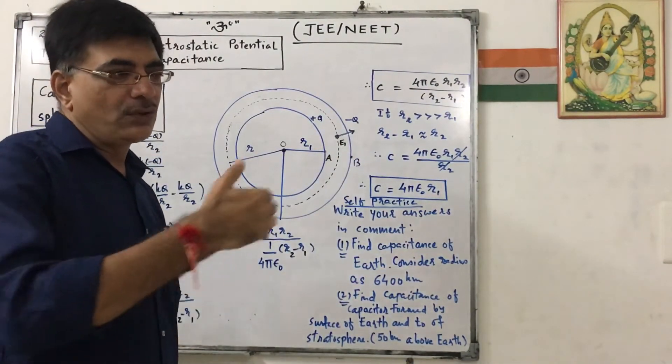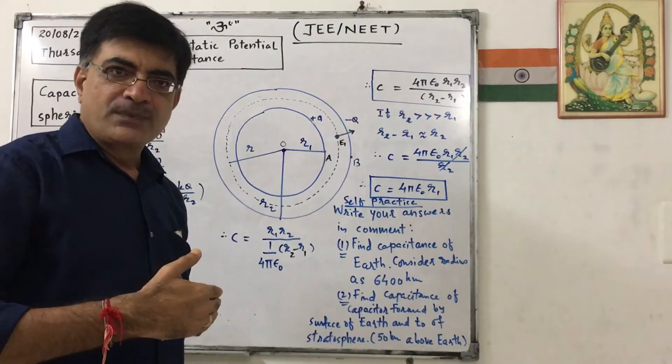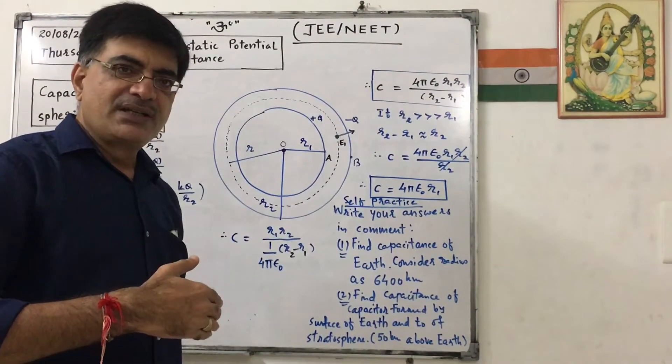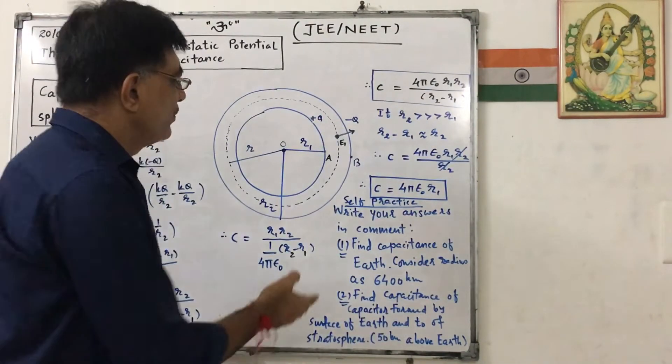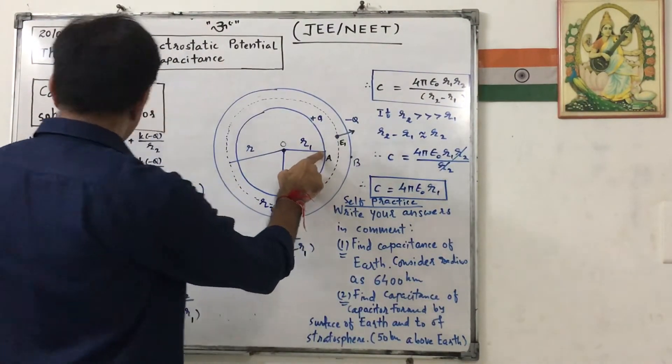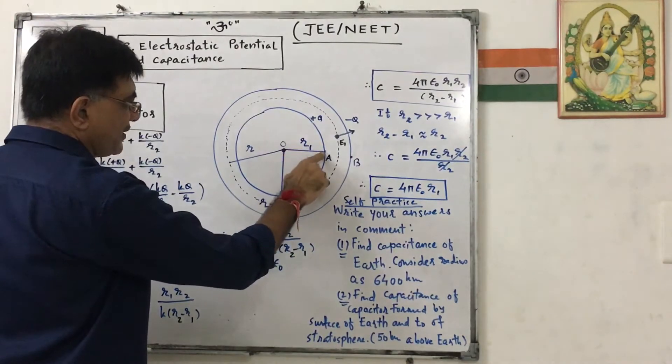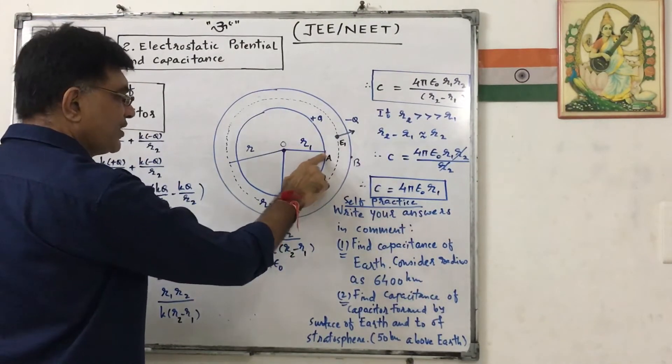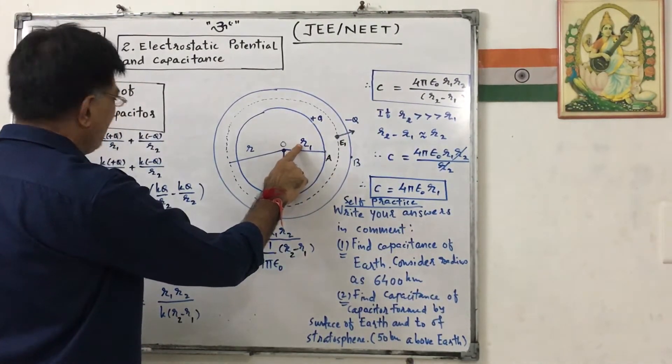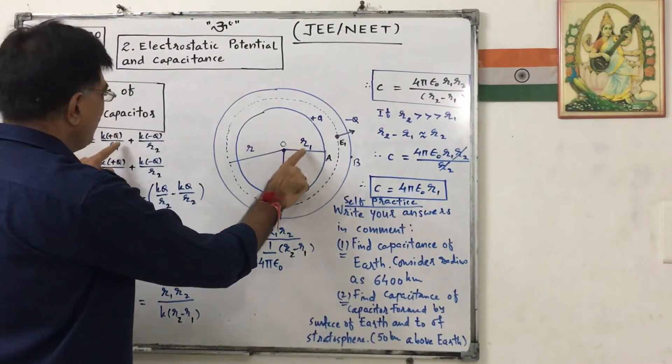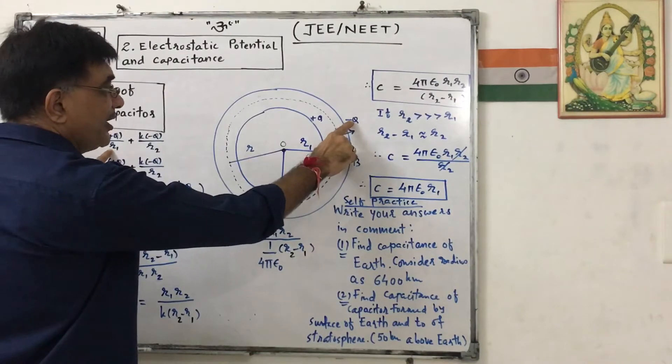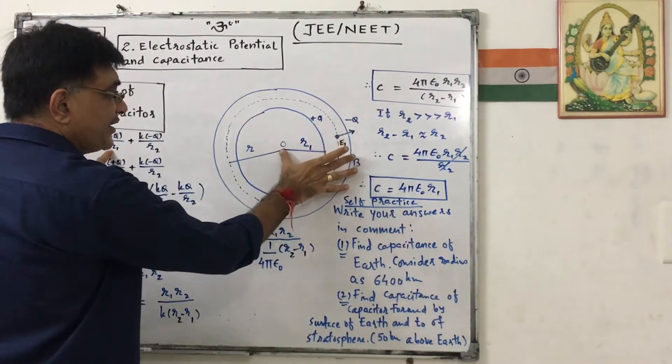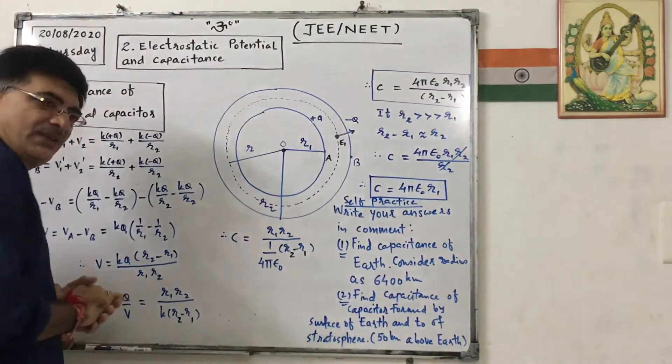Again we know that at all inside points, the potential is equal to the potential on the surface. So V at A equals to potential due to this shell plus potential due to this shell. Potential due to this shell is KQ upon R1. Potential due to this shell will be equal to K into minus Q upon this radius that is R2.